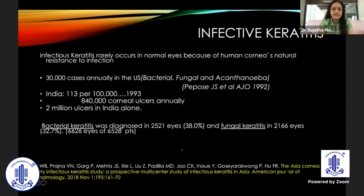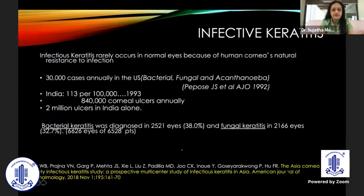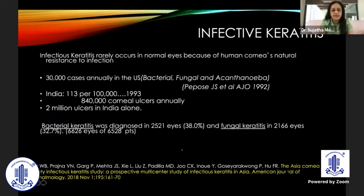Talking about infectious keratitis — why is it very important? It rarely occurs because of the human cornea's natural resistance to infection. There are 30,000 cases annually reported in the U.S., with a mixture of bacterial, fungal, and acanthamoeba infections. In India, it is around 8,40,000 to 2 million ulcers. A study by the Asia Cornea Society showed that out of 6,626 eyes in a multicenter study, 38% were bacterial keratitis, 37% fungal keratitis, and the rest were mixed infections.